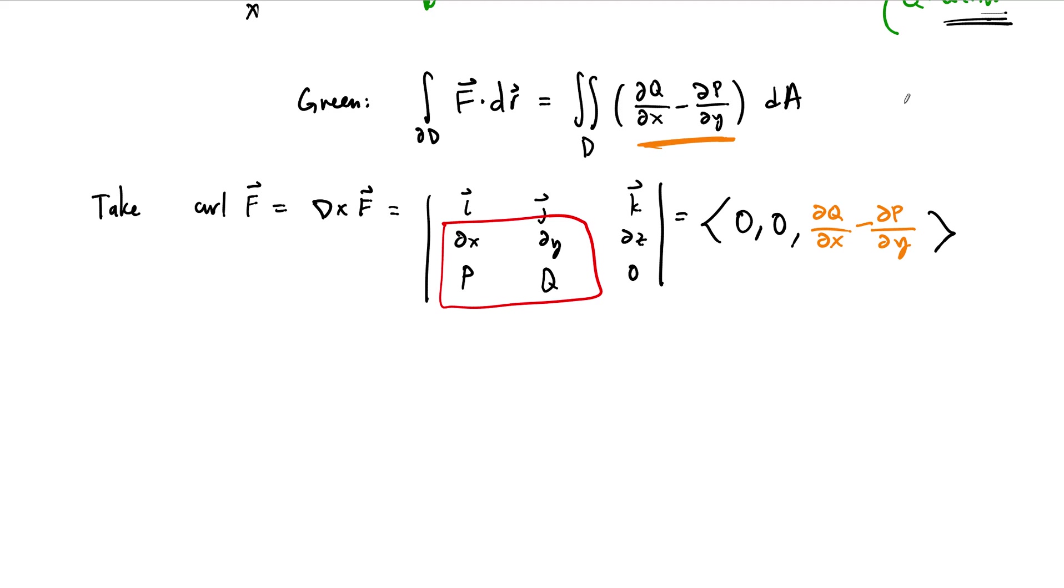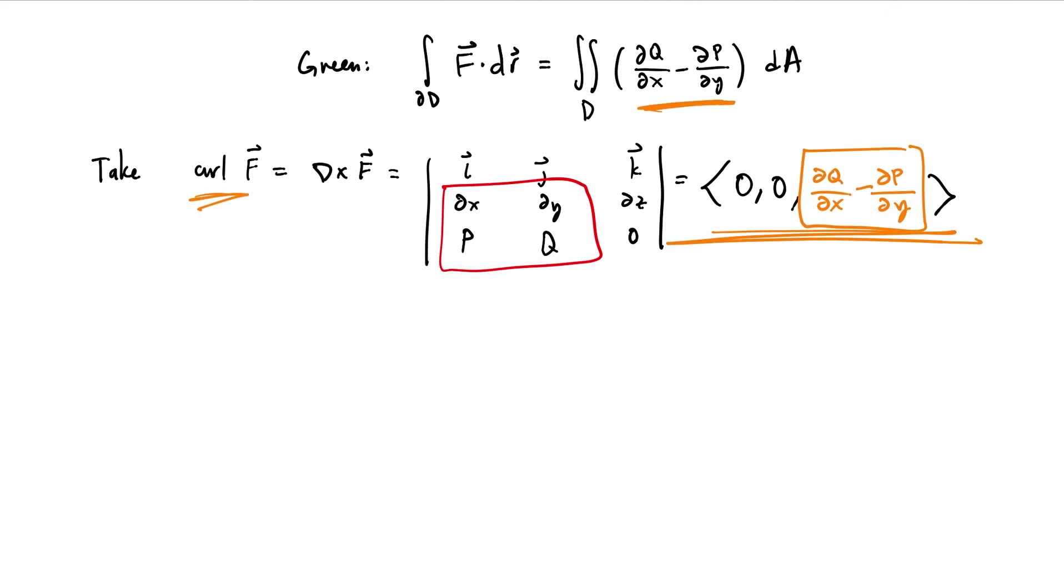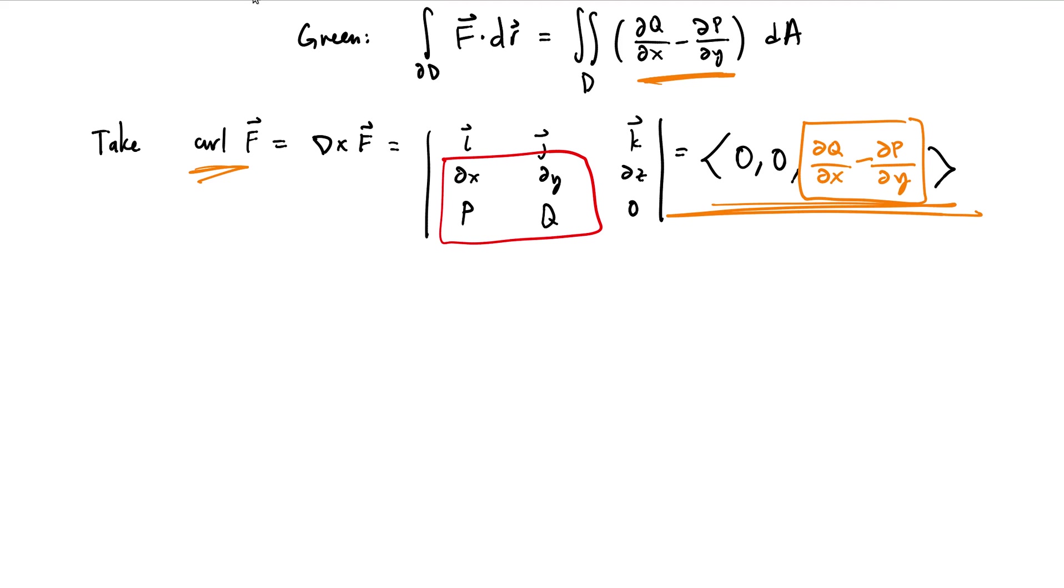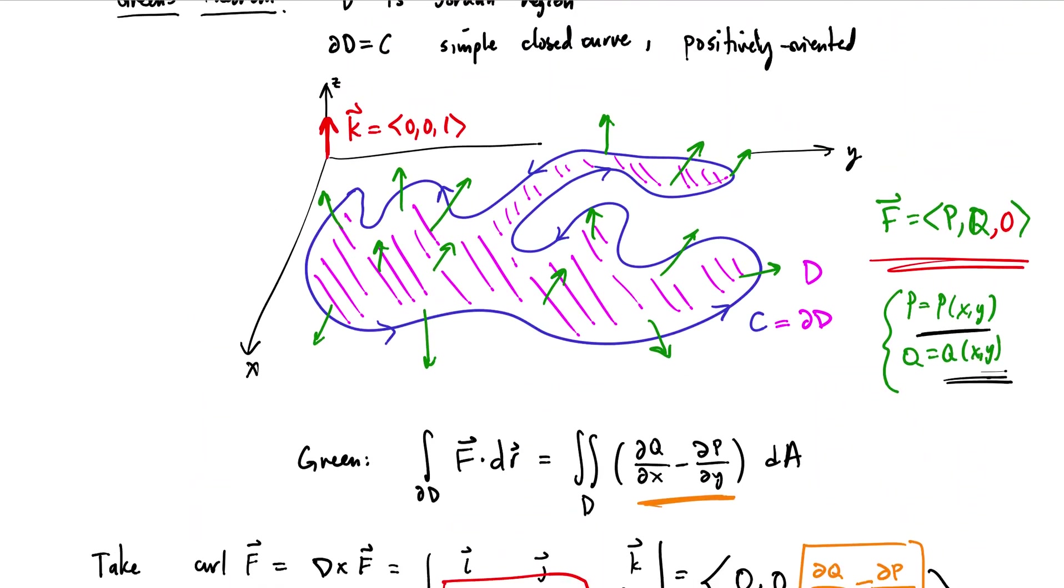So the first way to rewrite Green's theorem in terms of vectors, vector calculus, is to swap out this integrand with a curl. But it can't be the whole curl because a curl is a vector field. Even though the first two components of this vector field are zeros, it's a vector field. So what we have to do now is pick out the third component, pick out the one that we want.